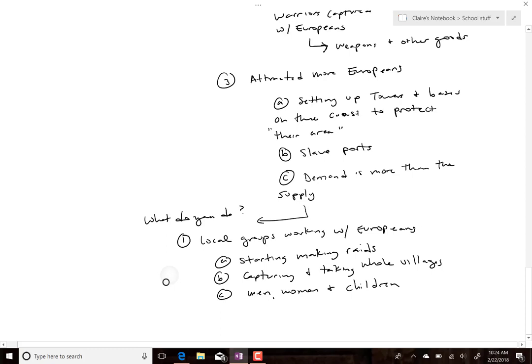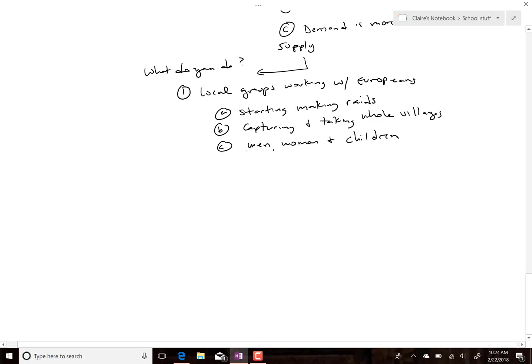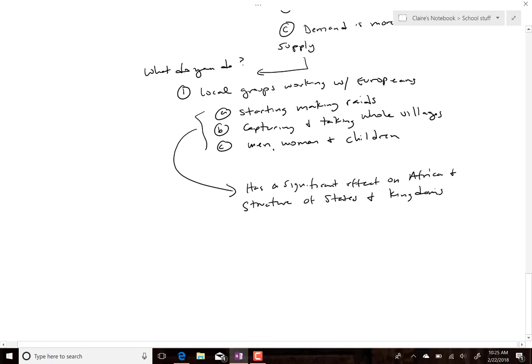This had a much more devastating effect on Africa and the structure of its states and kingdoms. The next biggest thing to have such an impact would be the Scramble for Africa, where Europeans ultimately redrew lines and put various groups together that had been fighting for centuries, claiming their stake. But this slave trade was already a massive disruption.